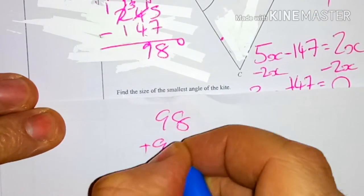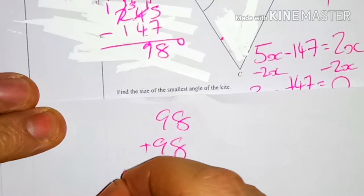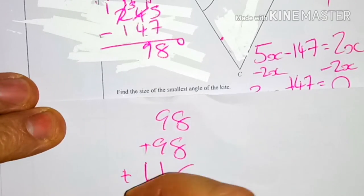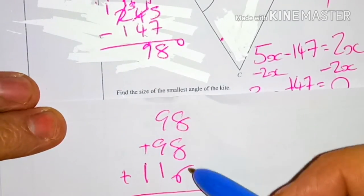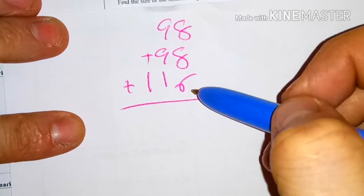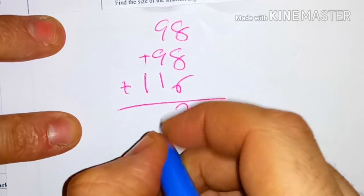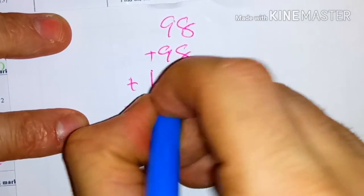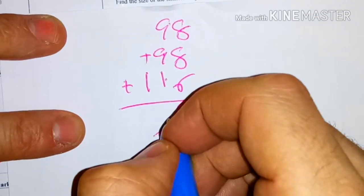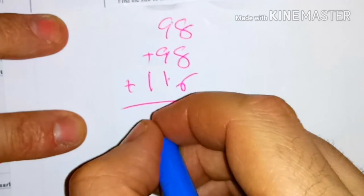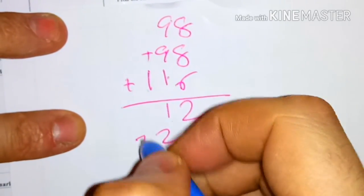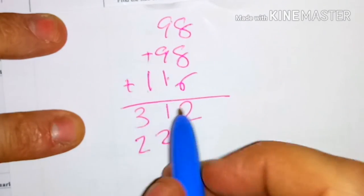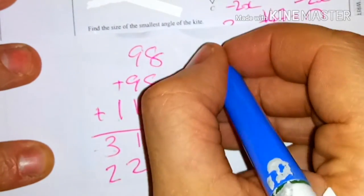Let's do this the long way. So I've got 98 plus 98 plus 116. 8 plus 8 is 16, plus 6 makes 22. 9 plus 9 is 18, plus 1 is 19, plus 2 is 21. 1 plus 2 is 3. So this is 312.